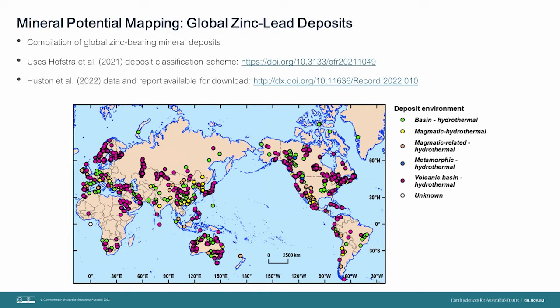The global zinc-lead compilation also includes the age of the deposits, metal endowment, as well as host rock alteration and mineralogy. This compilation allows the understanding of Australian mineral deposits in a global context and can provide useful insights into the formation of different zinc-lead mineral systems and which spatial proxies might be useful to help map these mineral systems processes as part of any subsequent mineral potential mapping studies undertaken.